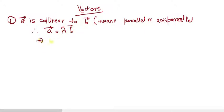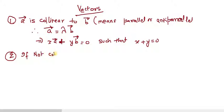Which can further be written as this. Plus, you can bring it to the left side, and then you can see such that X plus Y is equal to 0. Second point says, if not collinear, then what will happen? If not collinear, then this will definitely exist. Then in that case, X should be equal to Y should be equal to 0.